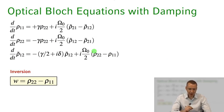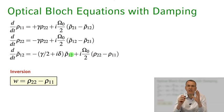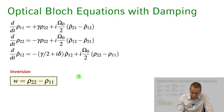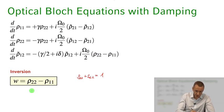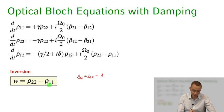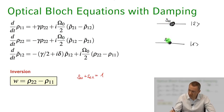Putting this all together, the optical Bloch equations now include +γρ₂₂, -γρ₂₂, and -γ/2·ρ̃₁₂ damping terms. We simplify further using ρ₁₁ + ρ₂₂ = 1, and introduce the inversion W = ρ₂₂ - ρ₁₁ - the difference of excited-state and ground-state populations. This lets us condense the equations for the two populations into a single equation for W.